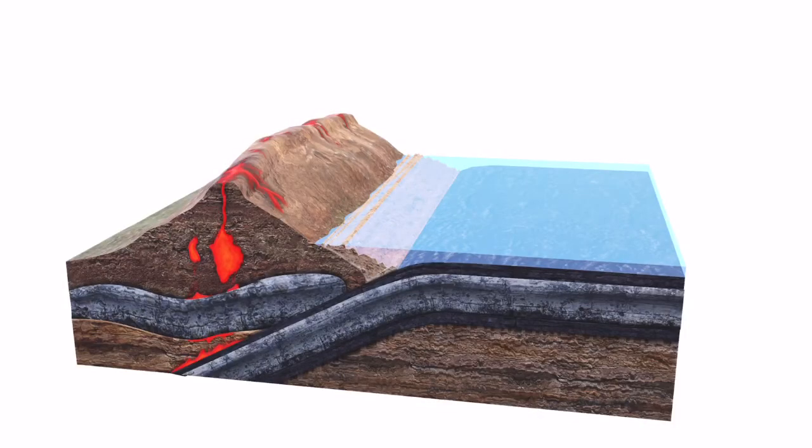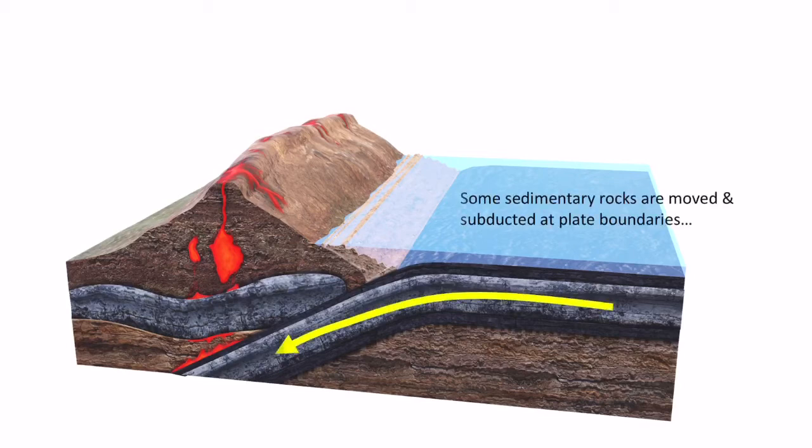However, the carbon doesn't just stay there. So here we can see a destructive plate boundary. Some of the rocks that have been formed at the bottom of the ocean, those sedimentary rocks, are actually moved by plate movements. And some of those rocks will be subducted into the mantle.